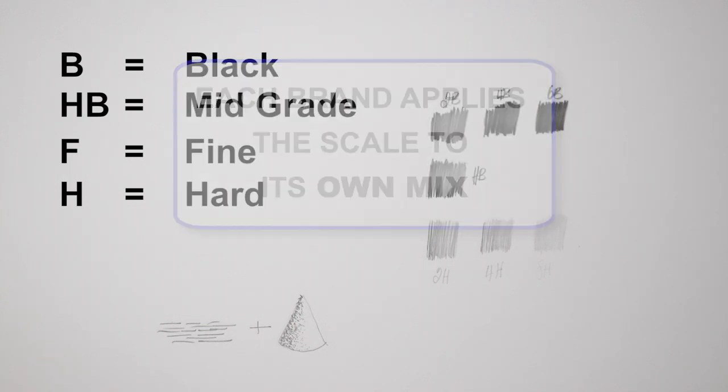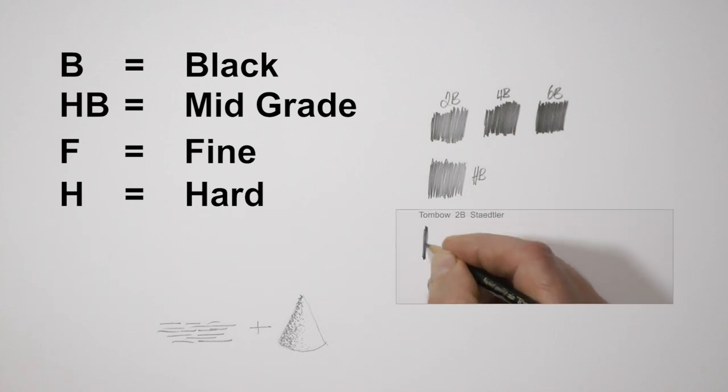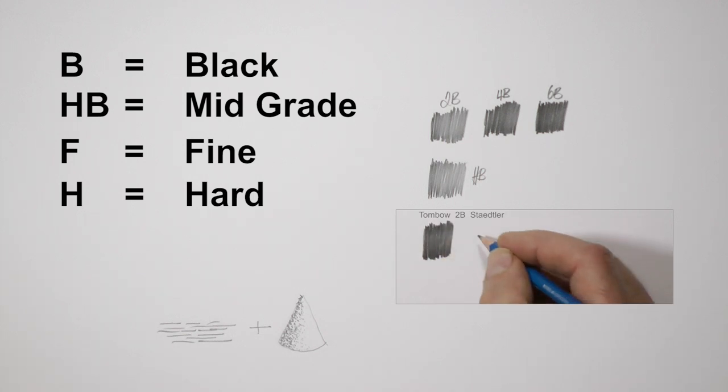The Japanese, for instance, prefer a darker HB than the Europeans, but that tends to shift the whole scale. So where manufacturer one might divide the range from their darkest to lightest into 17 grades, another might produce more grades such as Mitsubishi's High Uni which has 22 grades. For example, a Tombow 2B is darker than a Staedtler 2B. I use Staedtler Lumograph, but whatever your choice, find your preferred brand and stick with it.